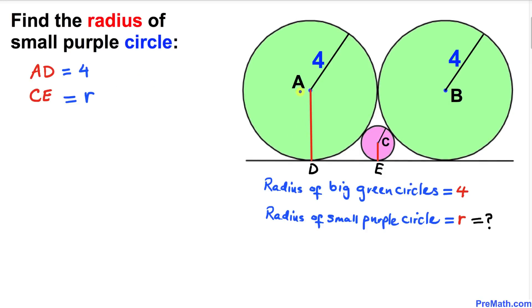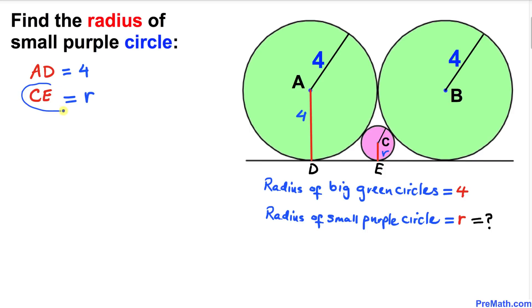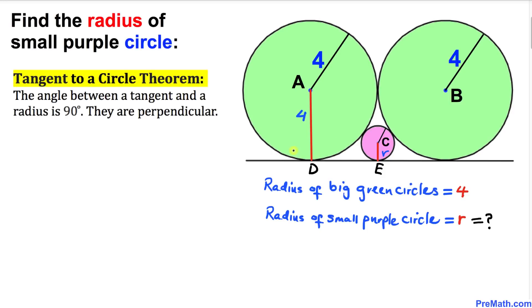Here's our very first step. The centers of all these circles are A, B, and C. This radius AD is 4 units, and the radius of this small purple circle is lowercase r.